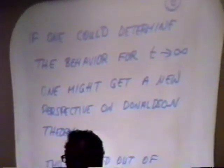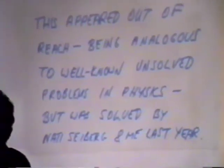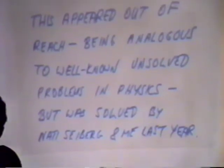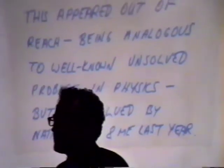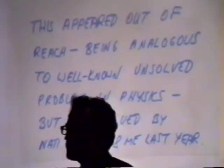If you could determine the behavior when t goes to infinity, you might get a new perspective on Donaldson theory. The trouble with that, and the reason it for some years wasn't pursued, was that this was analogous to well-known unsolved problems in physics, like explaining quark confinement in the theory of nuclear forces. However, in the last couple of years, Nati Seiberg revived some of those questions in the supersymmetric case and started to make a lot of progress on it. And Nati and I collaborated on this case and were able to understand precisely what happens for large t.